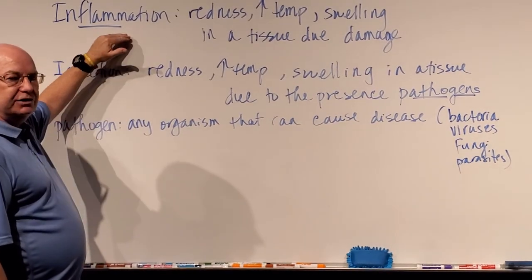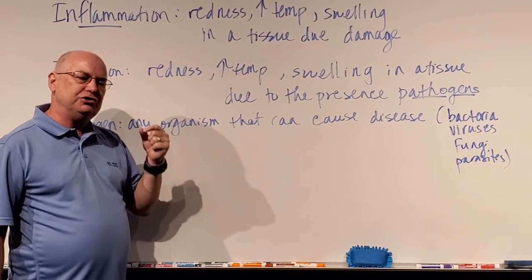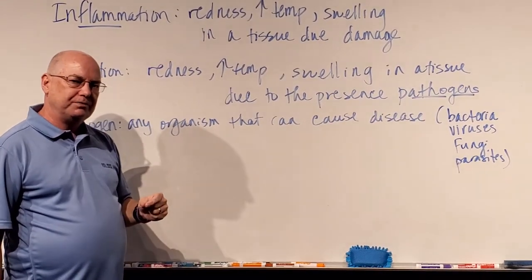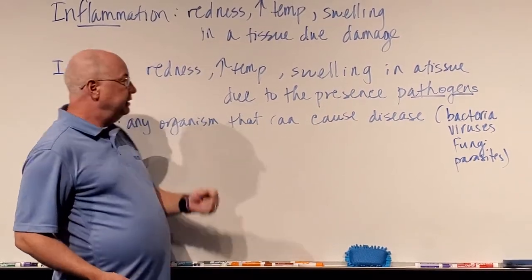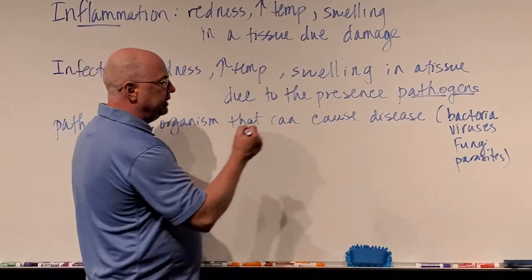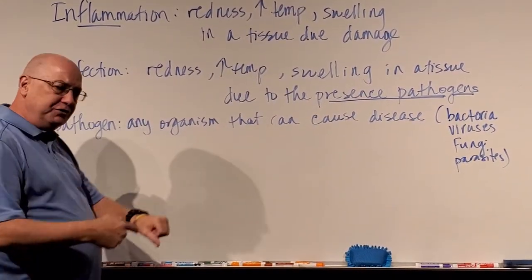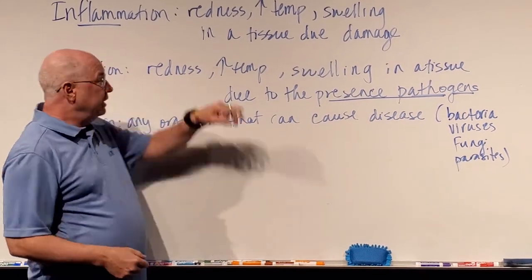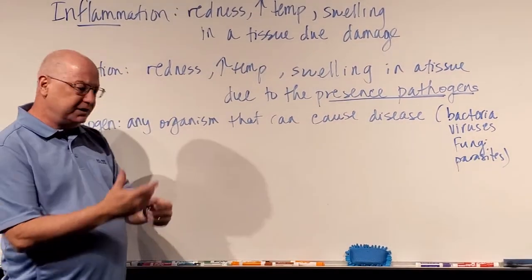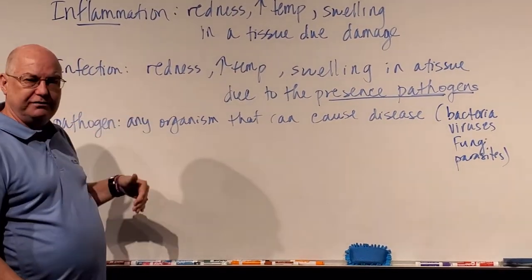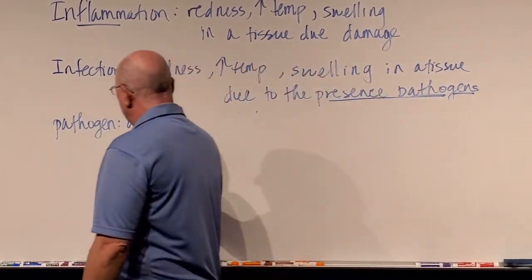Infection is distinctly different than just inflammation. When someone says you have inflammation, the indication is it's usually due to physical damage. If there is a pathogen present that's causing the redness and the swelling, then we call that definitely an infection — that is the key, it has pathogens present. Now if you get a cut, you might have some inflammation. If it starts to get really red and sore and you see pus and stuff developing, then you know you have an infection. There's a pathogen in there.